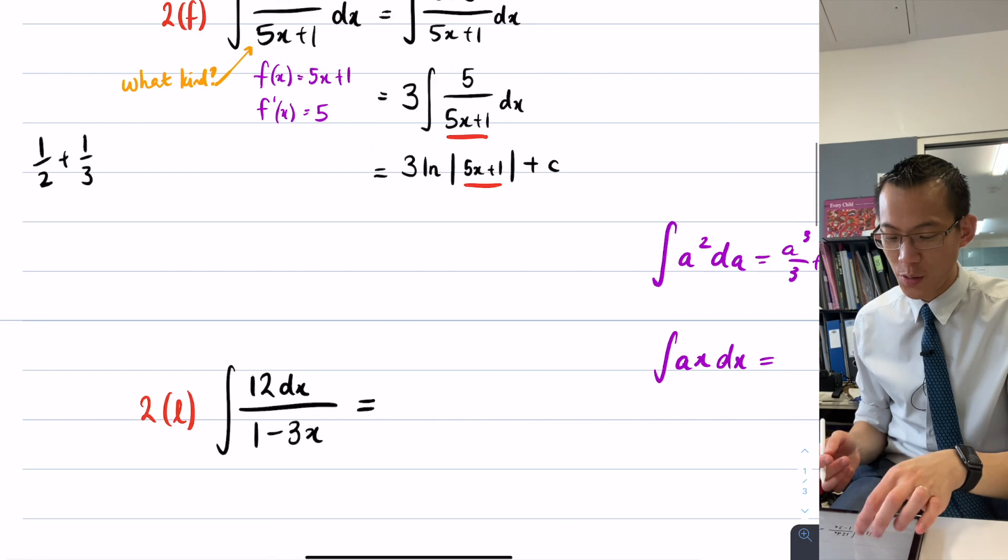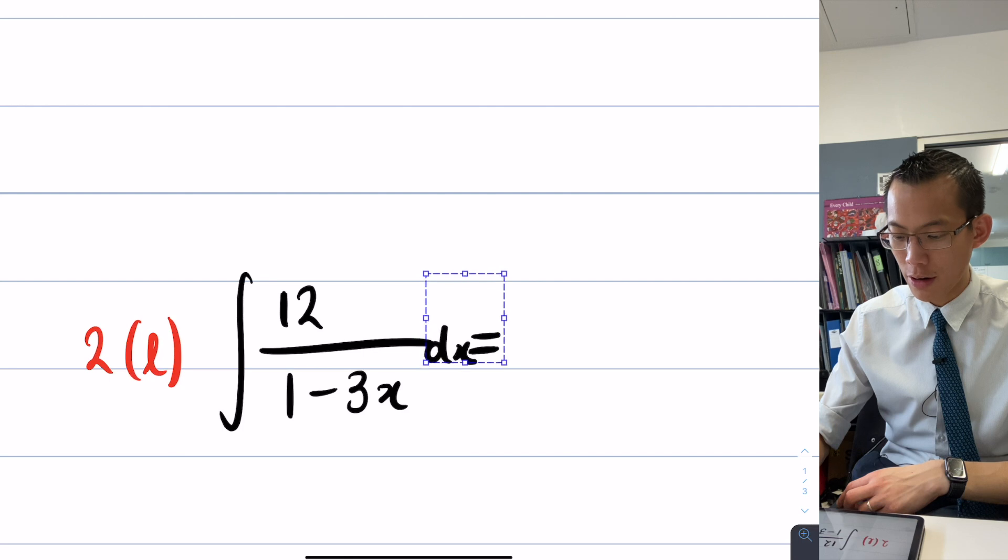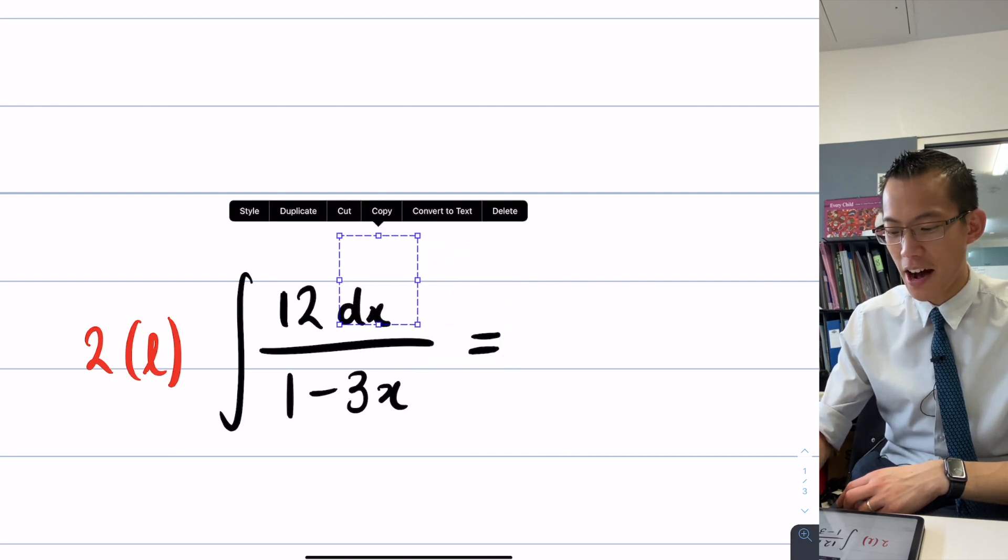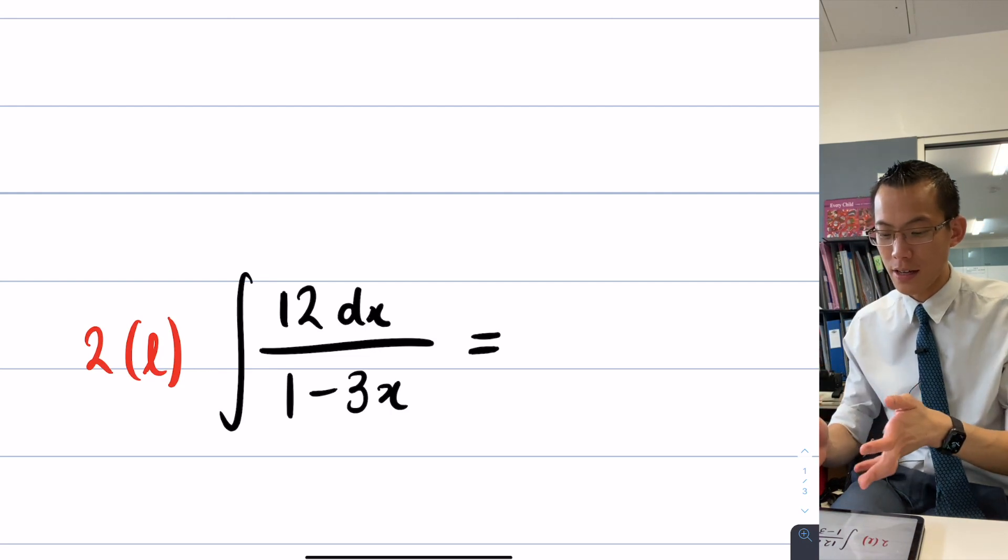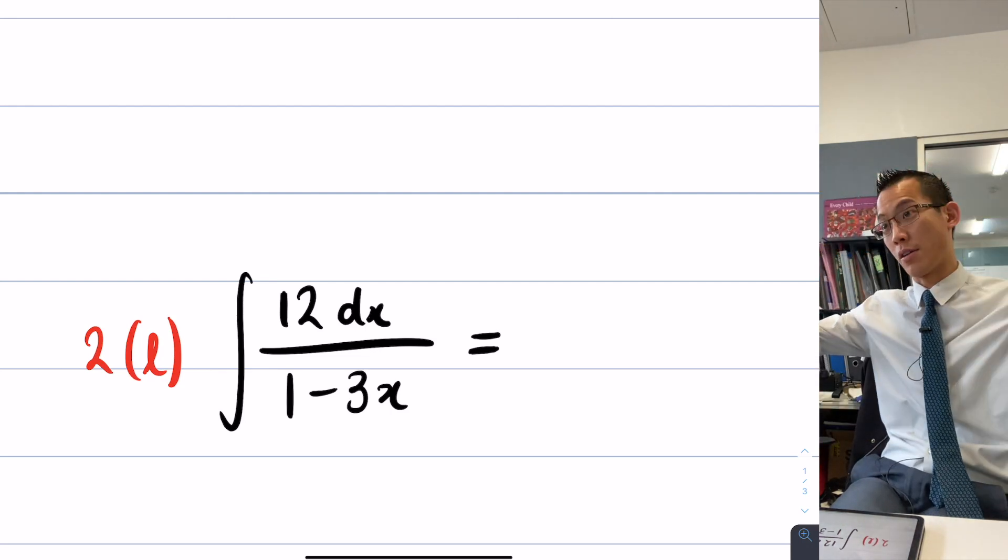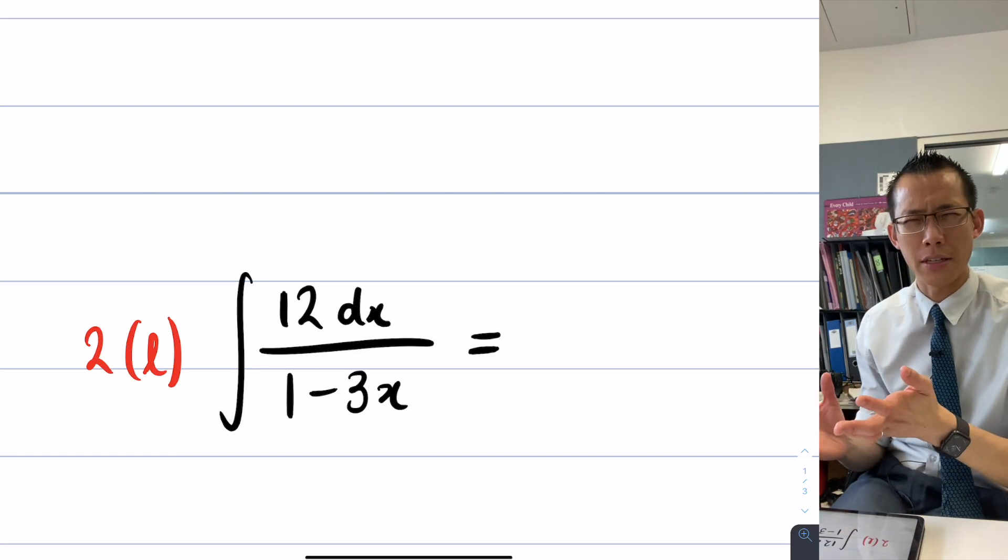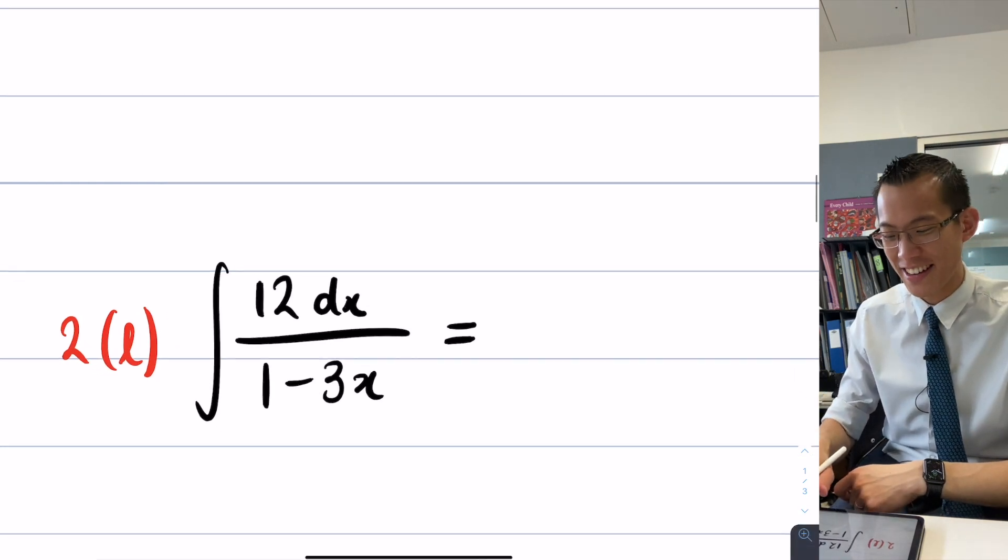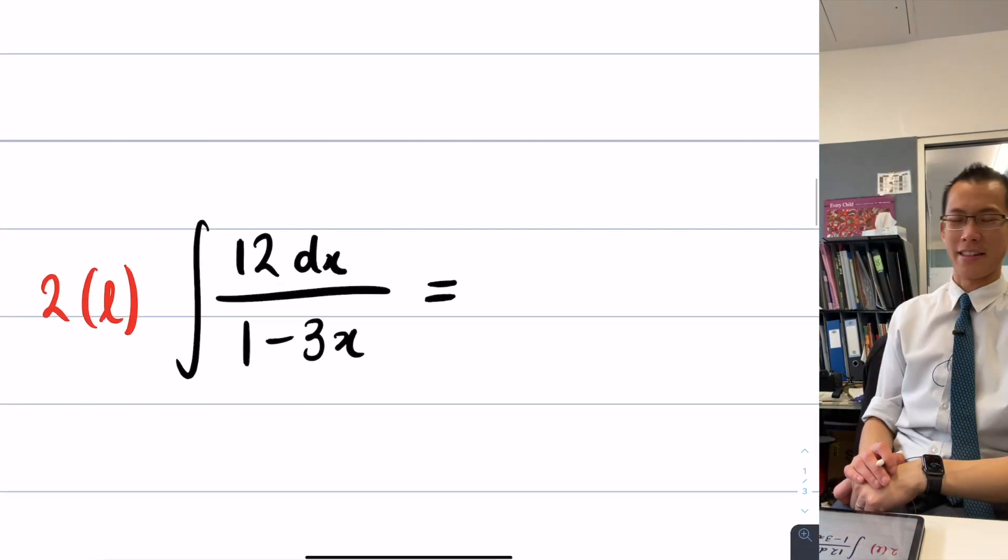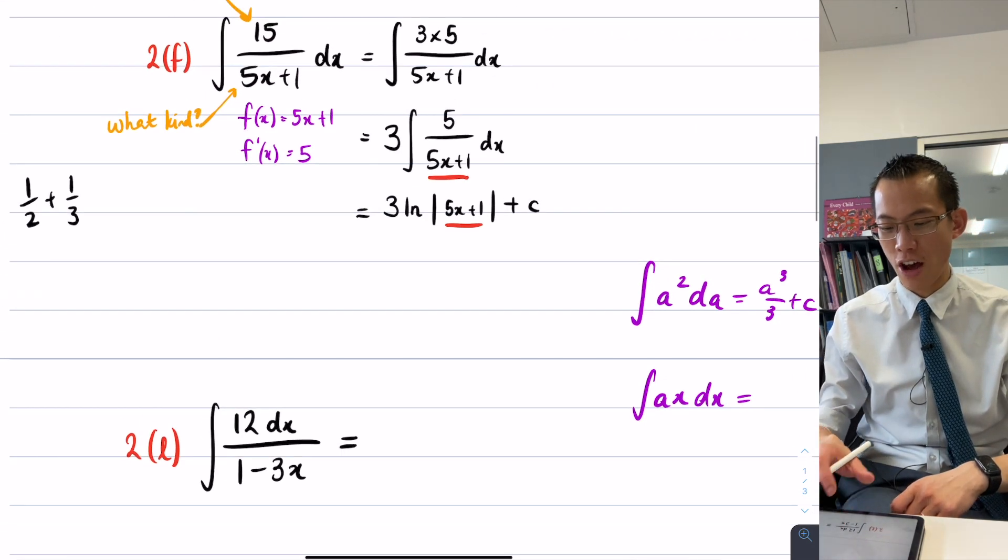So when you have a look at this, we used to put that dx over here, right? But in some senses, it doesn't matter too much where it is, but mainly it's telling us integrate with respect to x, pay attention to the x. So I just want to hang out there with the 12, that's where all the action is really happening.